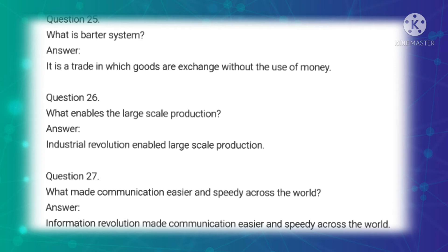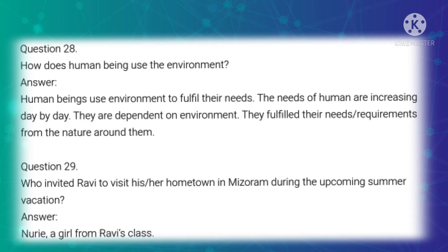Twenty-sixth question: What enables large-scale production? Answer: Industrial revolution enables large-scale production. Twenty-seventh question: What made communication easier and speedy across the world? Answer: Information revolution made communication easier across the world. Twenty-eighth question: How do human beings use the environment? Answer: Human beings use the environment to fulfill their needs. The needs of humans are increasing day by day; they depend on environment to fulfill their requirements from the nature around them.